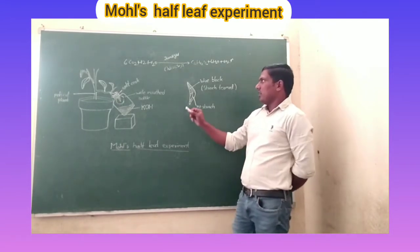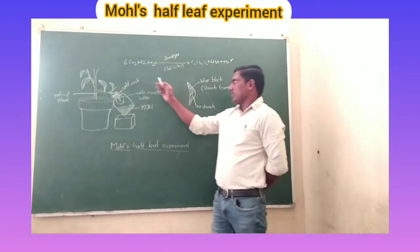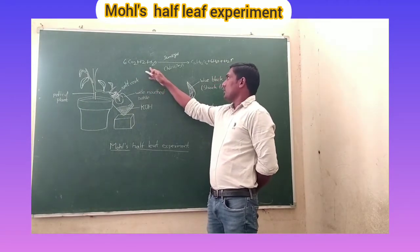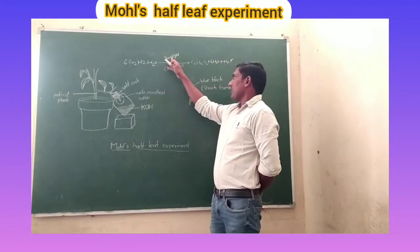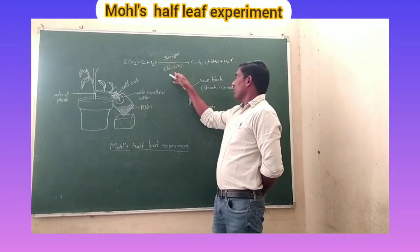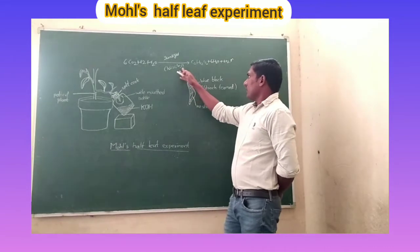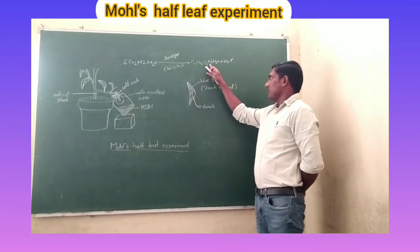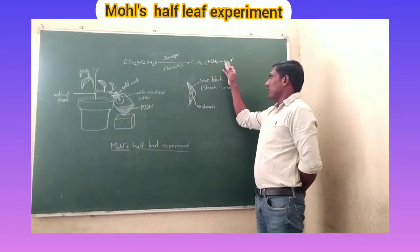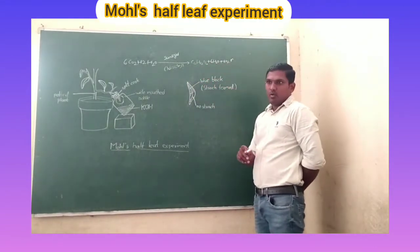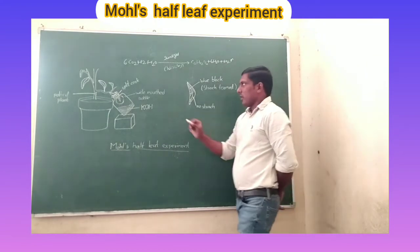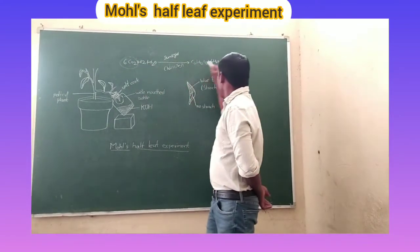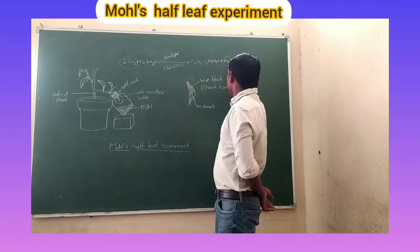We already know the photosynthesis equation: 6CO2 plus 6H2O, with sunlight and chlorophyll, gives C6H12O6 plus 6H2O plus 6O2. So plants take in carbon dioxide and release oxygen.